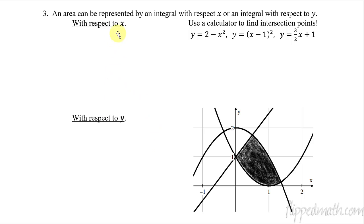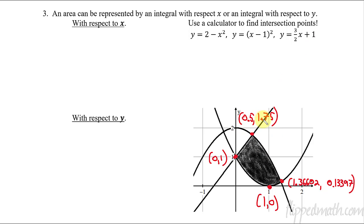Let's do one more that's a bit more challenging. This time we'll set up the integrals both with respect to x and with respect to y. We need all the intersection points. The easy ones are (0, 1) and (1, 0). The top intersection is at (0.5, 1.75) and the other intersection is at approximately (1.36602, 0.13397). Write those down.